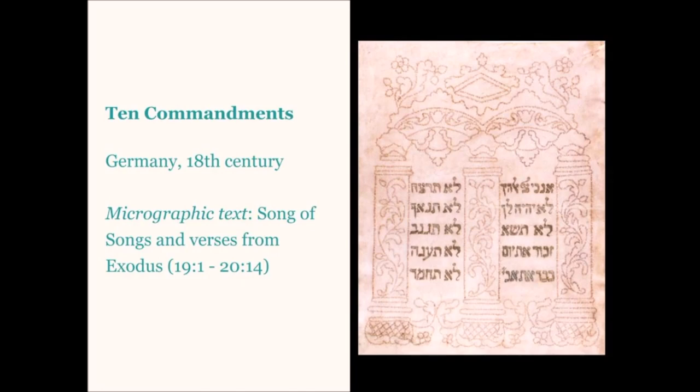This piece is labeled the Ten Commandments. The text in the book of Exodus describes the revelation at Mount Sinai, and it culminates with the giving of the Ten Commandments, a representation of which is formed in this micrograph. The balance of the design is composed of the entire text of the Song of Songs, long understood by Jews to represent the love between God and Israel.